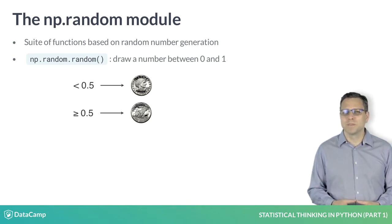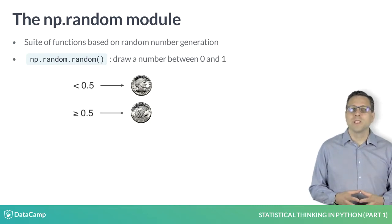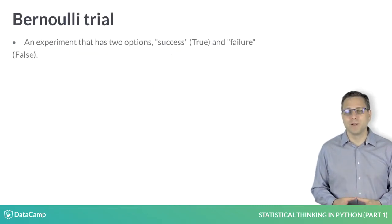This type of experiment, where the result is either true (heads) or false (tails), is referred to as a Bernoulli trial, and we will work with these more as we go through the course.